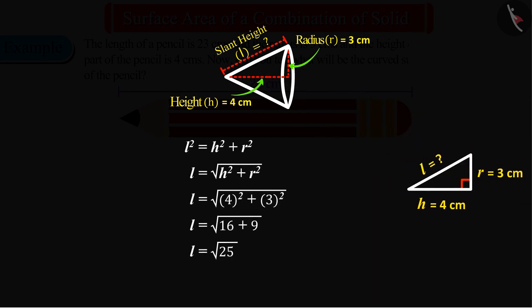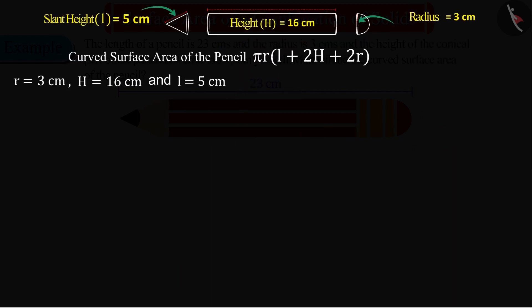We can find the slant height of the cone with this formula, which we get as 5 centimeters. By substituting the value of the radius r, the height H, and the slant height L in this formula and upon solving, the curved surface area of the figure is obtained as 405.42 square centimeters.